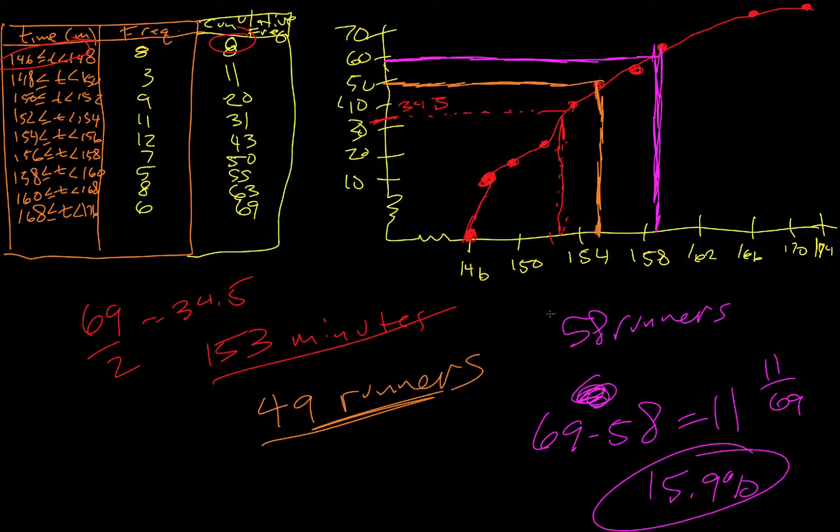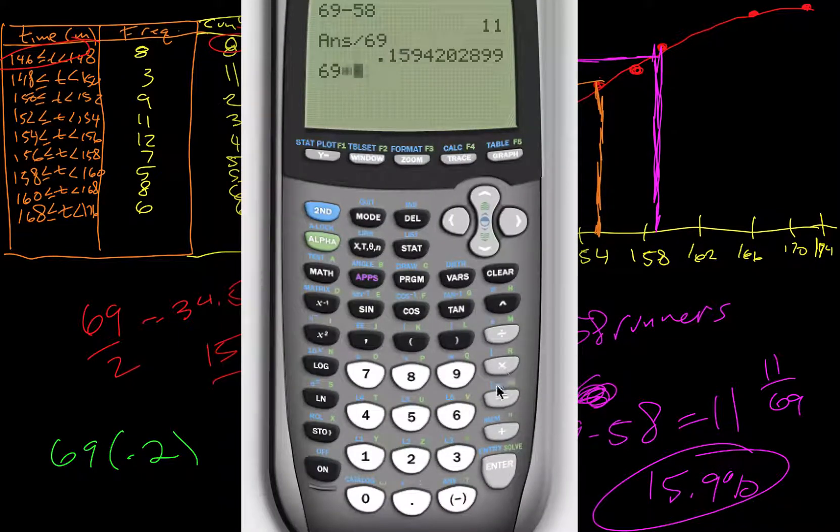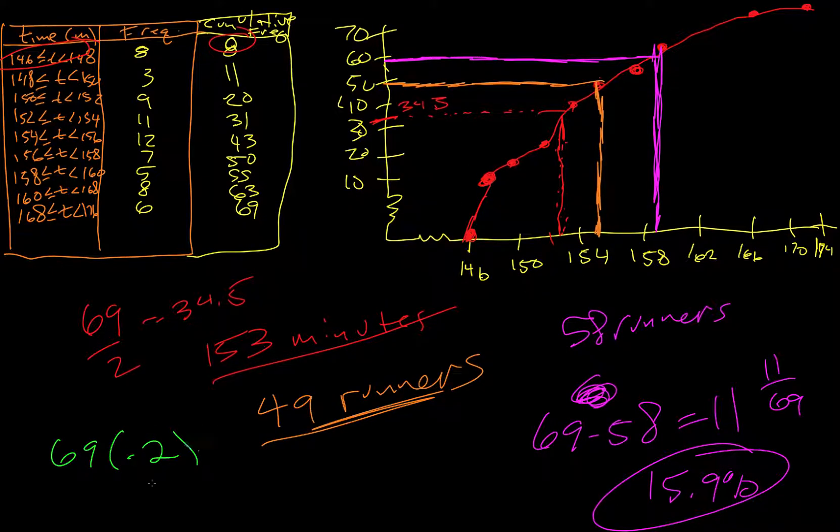Now the last part, we want to use the graph to estimate the time taken by a competitor who finished in the top 20% of runners completing the marathon. So the top 20%. So if we say 69 times 0.2, let's figure that out first. So that's 13.8.